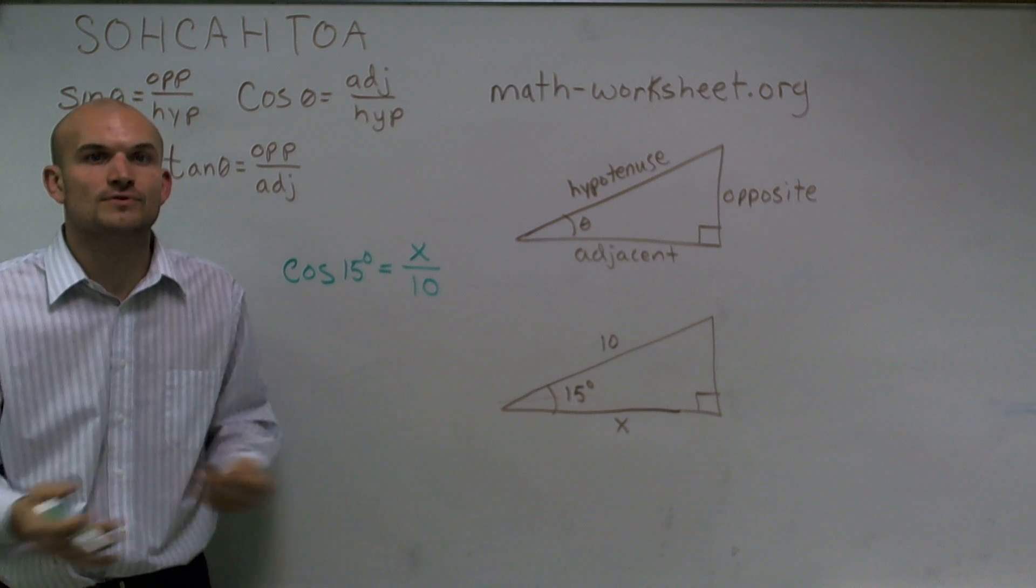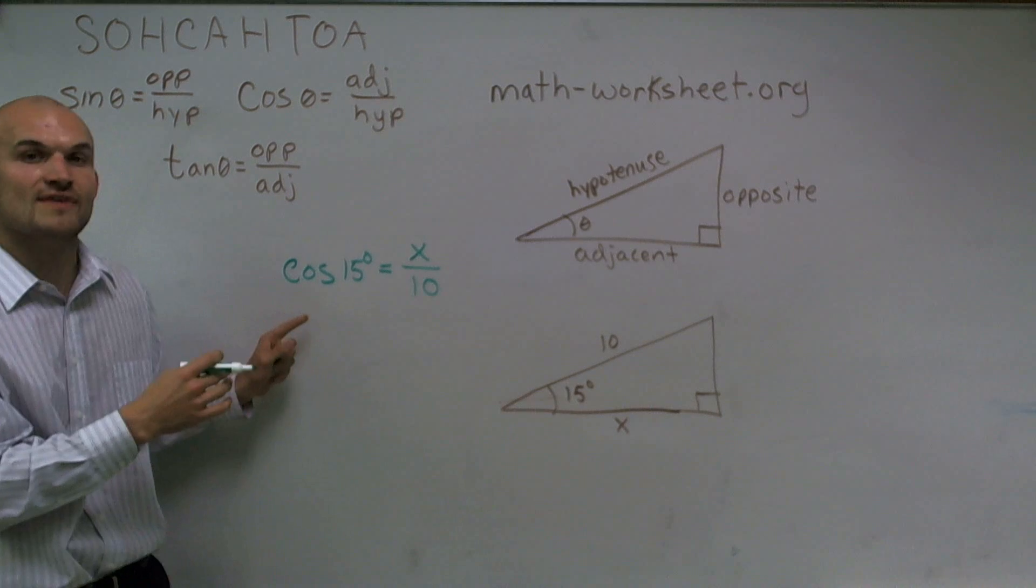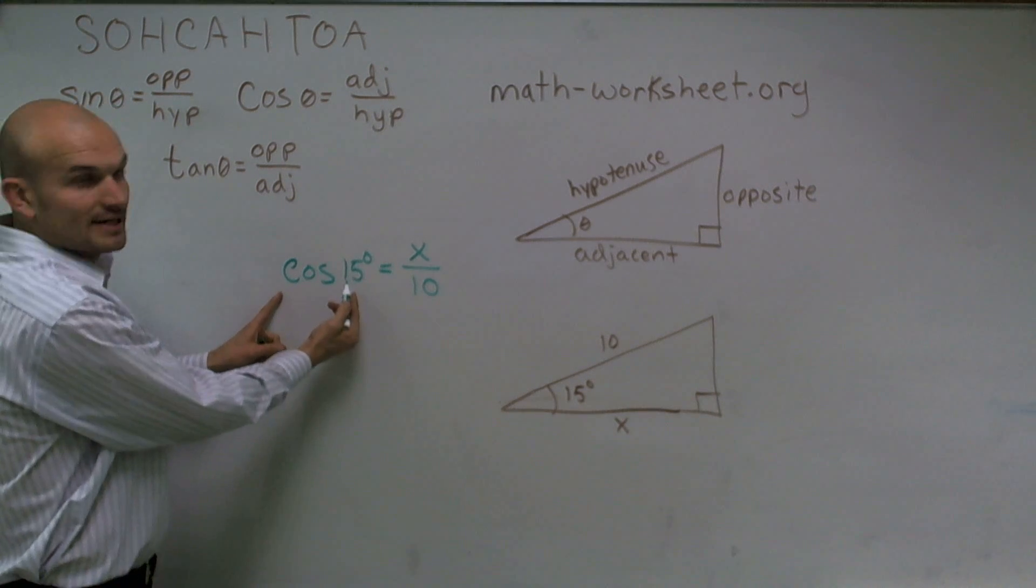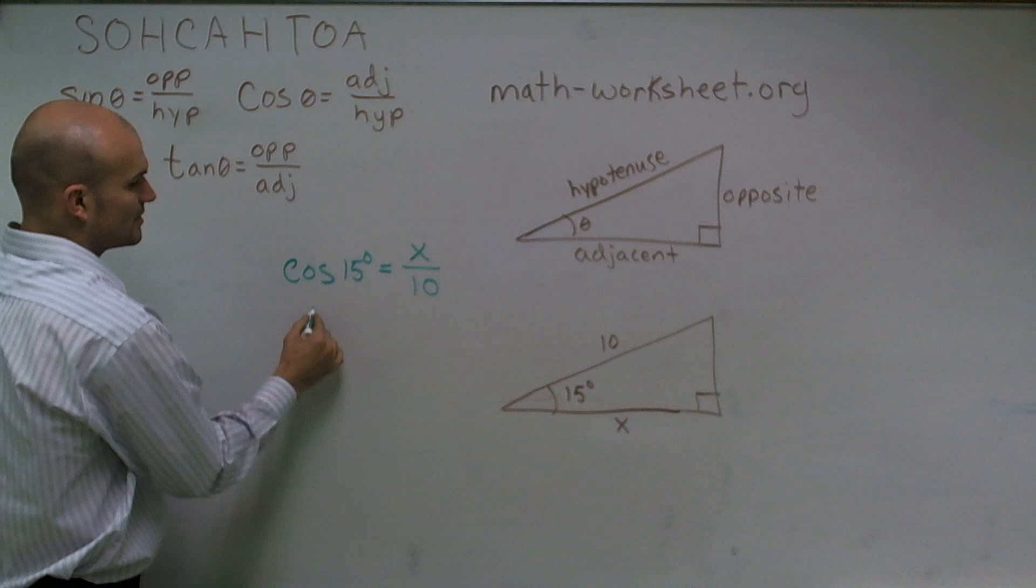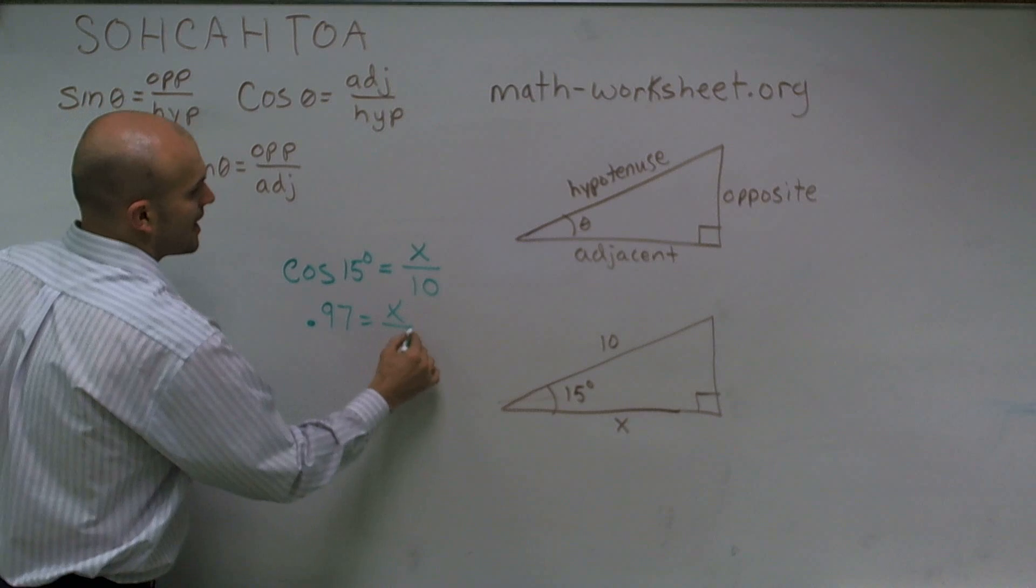Now, it will be very helpful to have a scientific calculator so you can evaluate what cosine of 15 degrees is. Cosine of 15 degrees is going to be, when you round it, will be 0.97 equals x over 10.